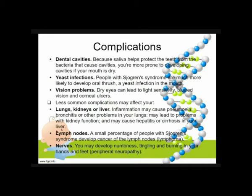Lymph nodes can also be affected. A small percentage of people with Sjogren's syndrome develop cancer of the lymph nodes, or lymphoma. The nerves may also develop numbness, tingling, and burning sensation of the hands and feet, known as peripheral neuropathy.